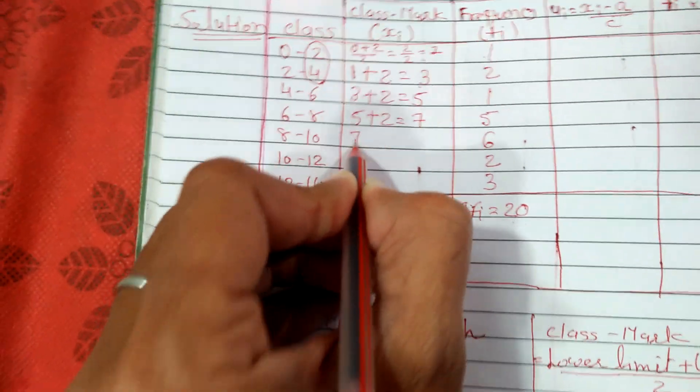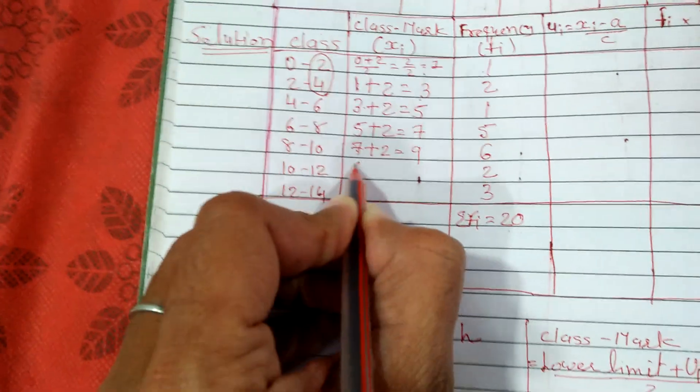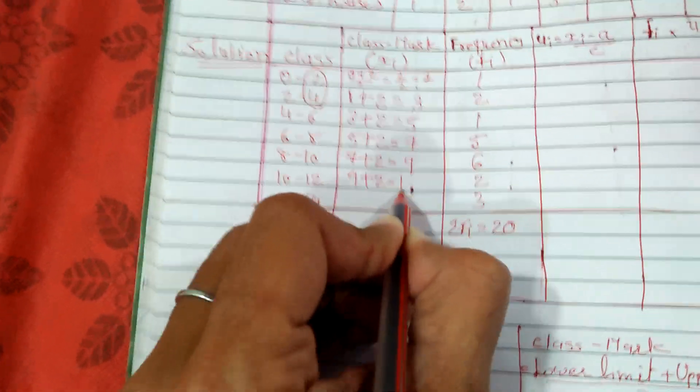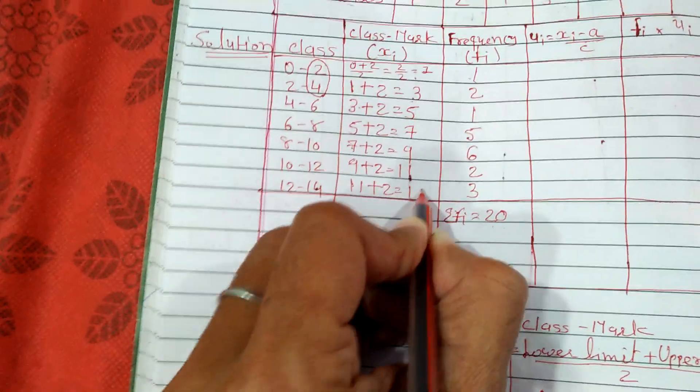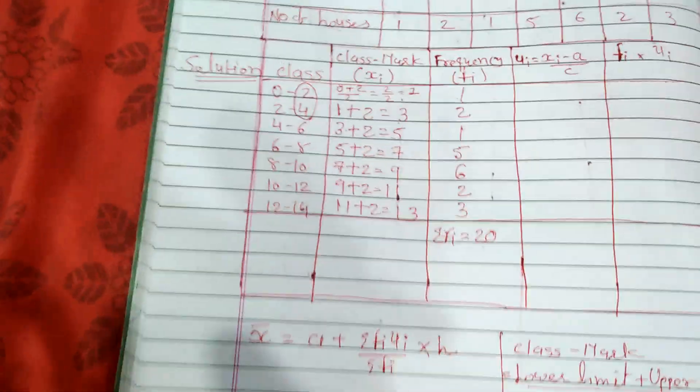Same way, 7 plus 2 equals 9. 9 plus 2 equals 11. 11 plus 2 equals 13. So here the second column is over.